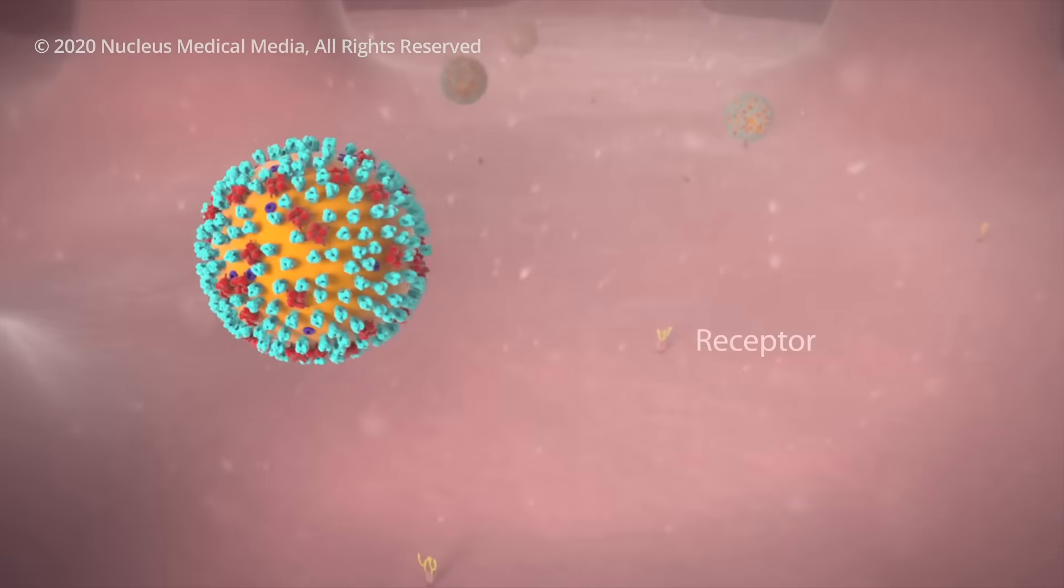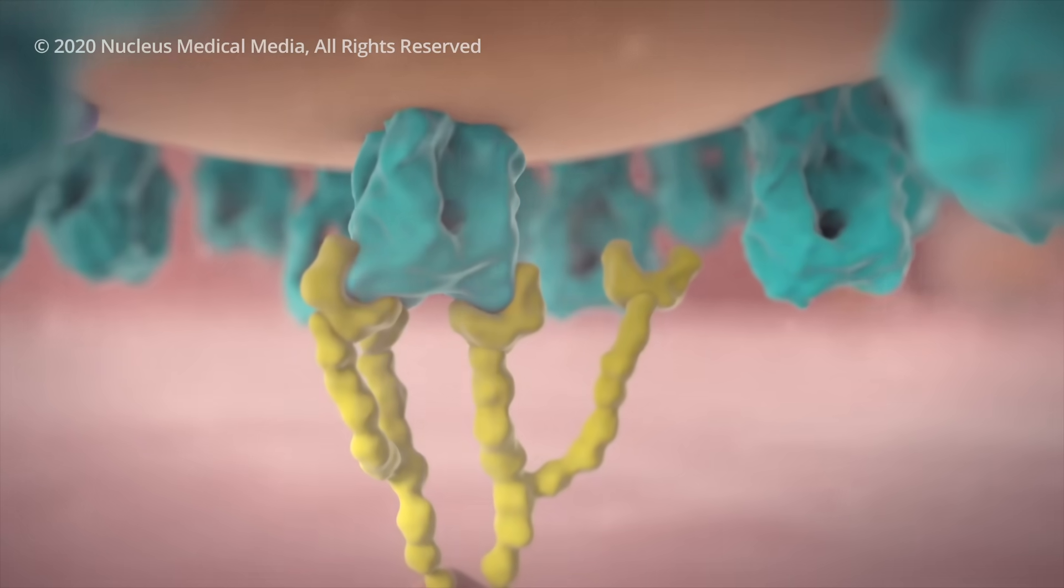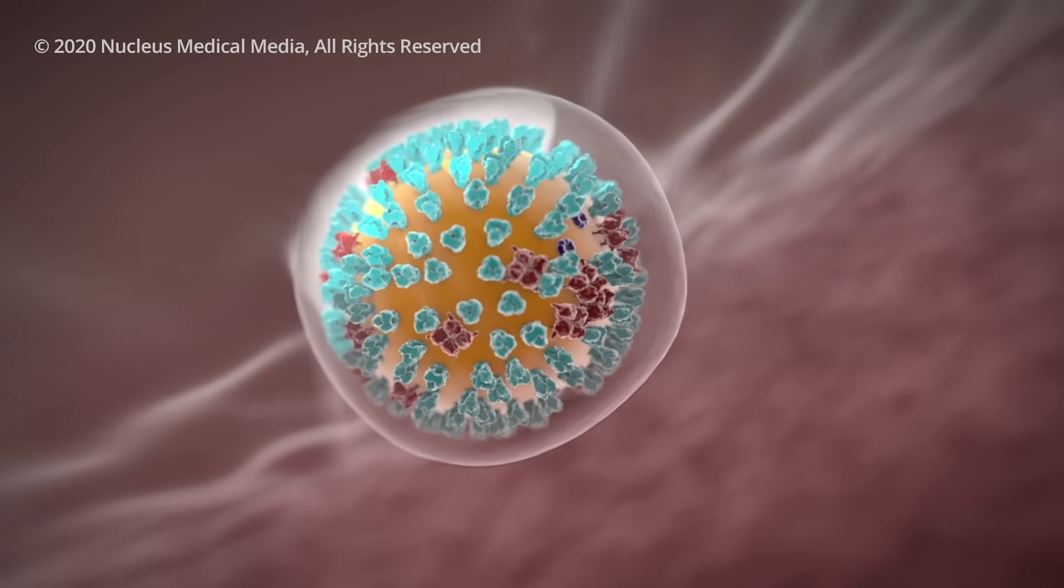One spike on the virus inserts into a receptor molecule on your healthy cell membrane like a key in a lock. This action allows the virus to get inside your cell.